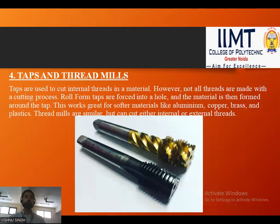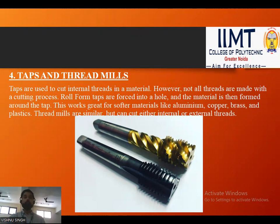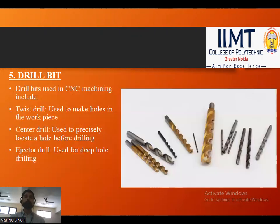Next are taps and thread mills. Taps are used to cut internal threads in a material; however, not all threads are made with a cutting process — roll form taps are forced into a hole and the material is formed around the tap. This works well for softer materials like aluminium, copper, brass, and plastics. Thread mills are similar but can cut either internal or external threads.